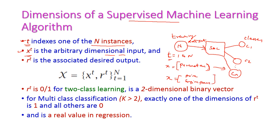For example, in our family car example, x has parameters: price and engine power. N number of such samples will be there. The next notation is r_t, which is the associated desired output. If r equals 1, then the sample belongs to a particular class — for example, a family car.